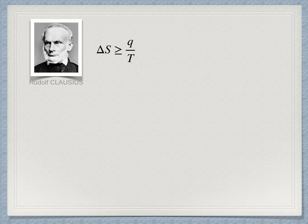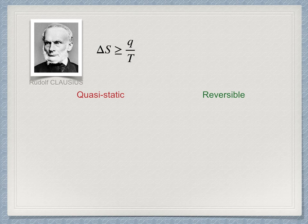This requires the discussion of two terms: quasi-static and reversible. When applied to a chemical or physical process, quasi-static means that the process occurs so slowly that the system is always in internal equilibrium.